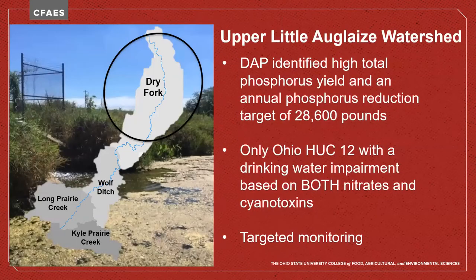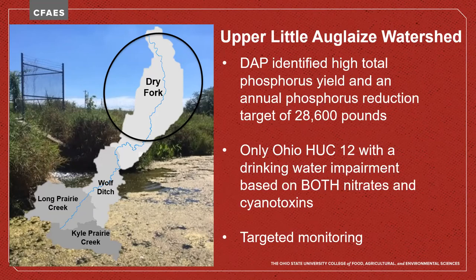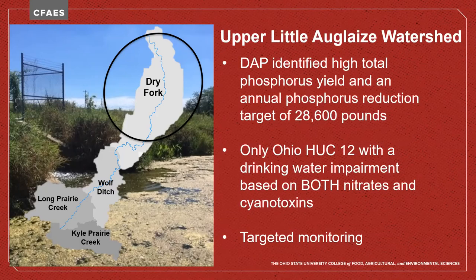One example of this finer scale approach: the Dry Fork HUC-12 was identified through the domestic action plan as having a high phosphorus yield, and also has a drinking water impairment for nitrates and cyanotoxins. With this information, a project was implemented targeting monitoring and sampling of that entire larger watershed to hopefully reduce nutrient loading and lessen the pressure on the drinking water plant. The smaller-scale approach allows better measurement of best management practice effectiveness and gives resources a more targeted area for monetary support. The city of Delphos, where the drinking water intake is installed, sometimes has a hard time filling its drinking water reservoir due to intense algal growths in summer.